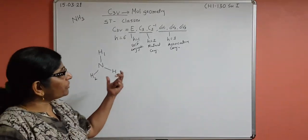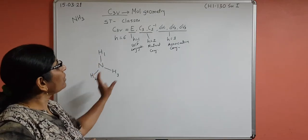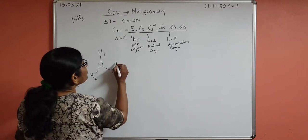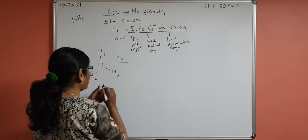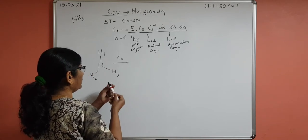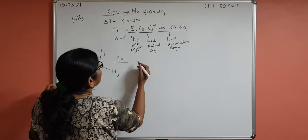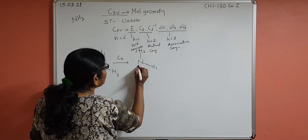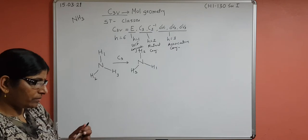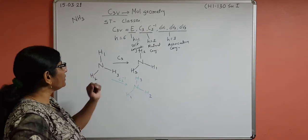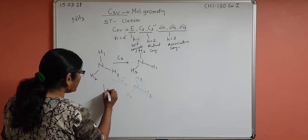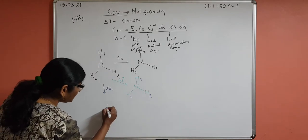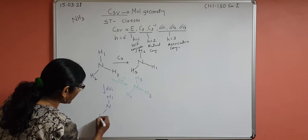Before doing any similarity transformation workout, you need all six operations. When you perform identity, the positions of H1, H2, and H3 remain unchanged. When we perform C3 (clockwise rotation by 120°), the positions change accordingly. For σV1, H1 and N remain in place, and only H2 and H3 exchange positions.